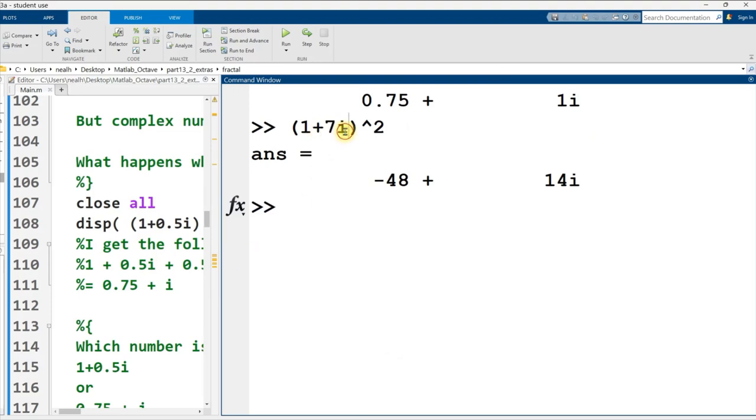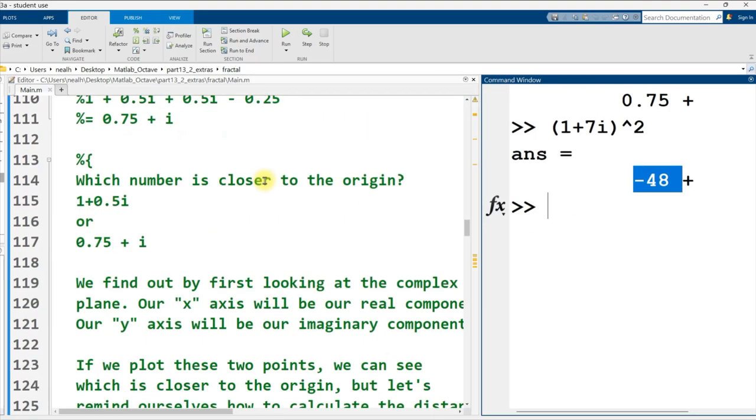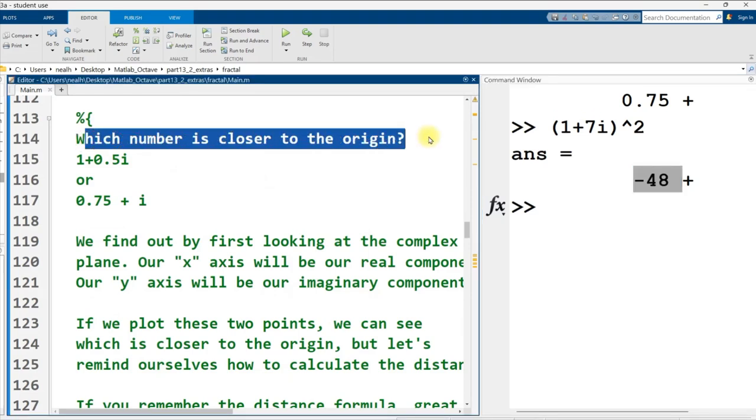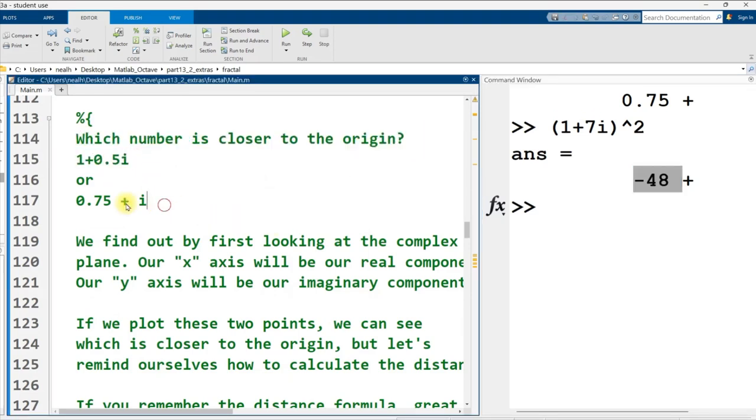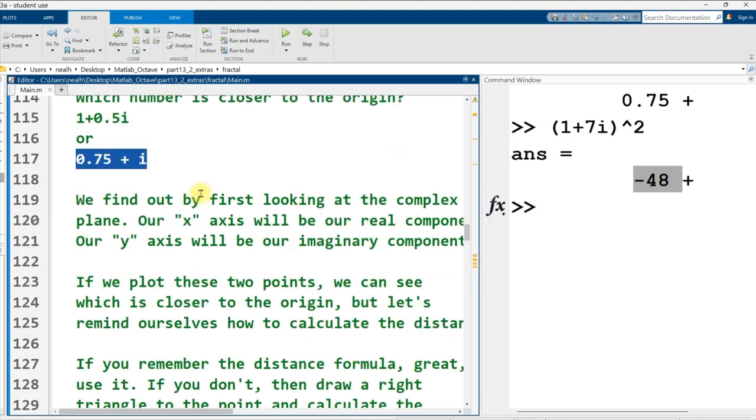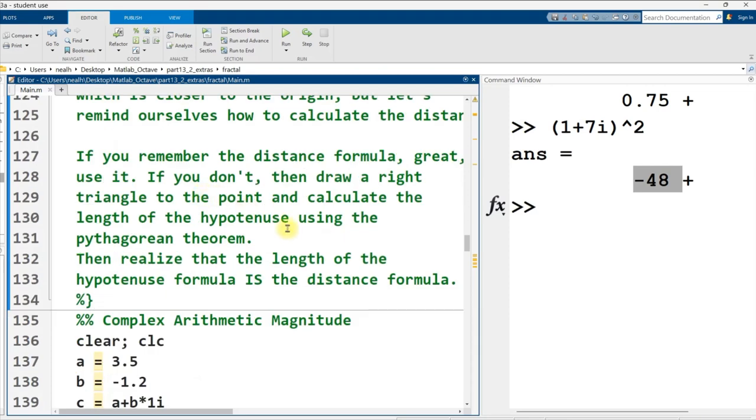All right, so I just made the coefficient on i a very large positive number, and square it, and bam, now this is very negative. Now when we're asking which number is closer to the origin, this number or this number, it's relatively easy to see. This is a 1 and 0.75, so obviously this one is further away.